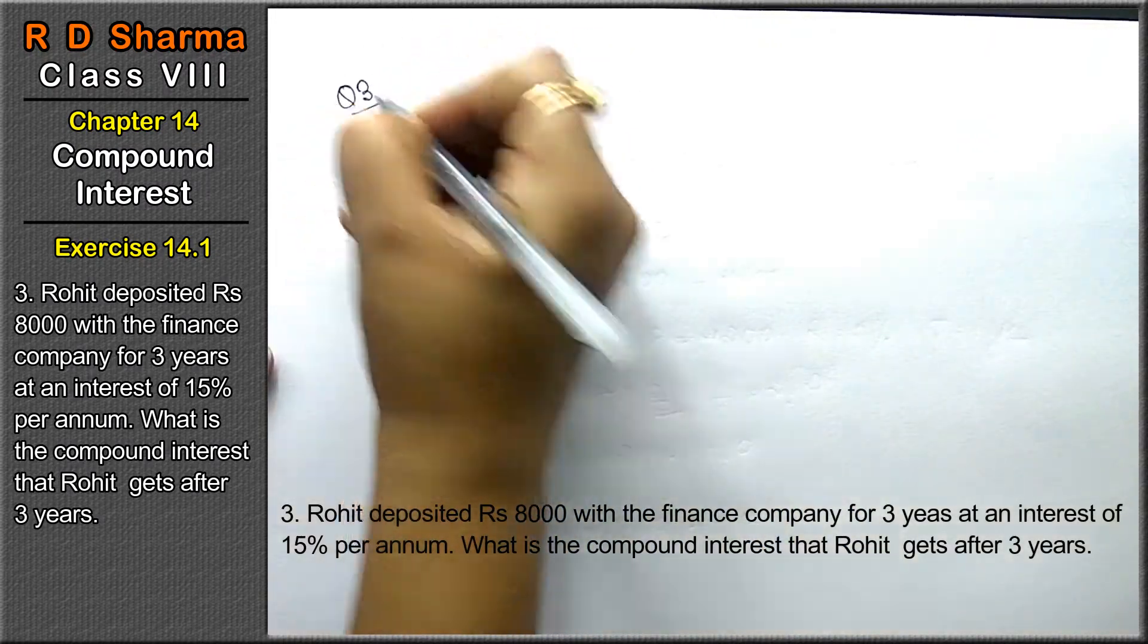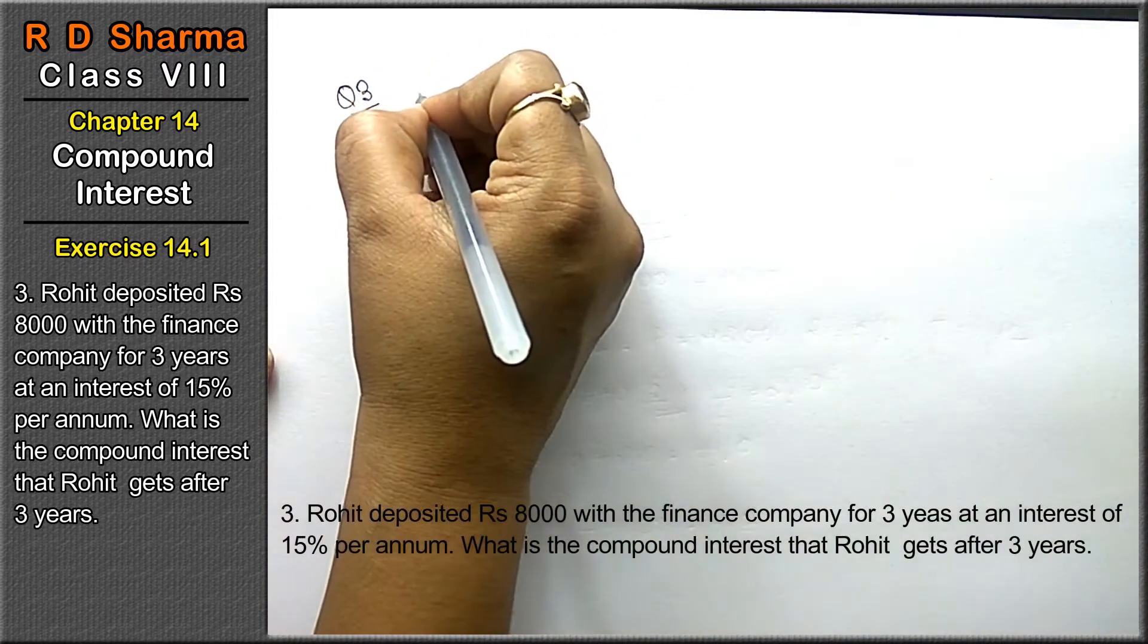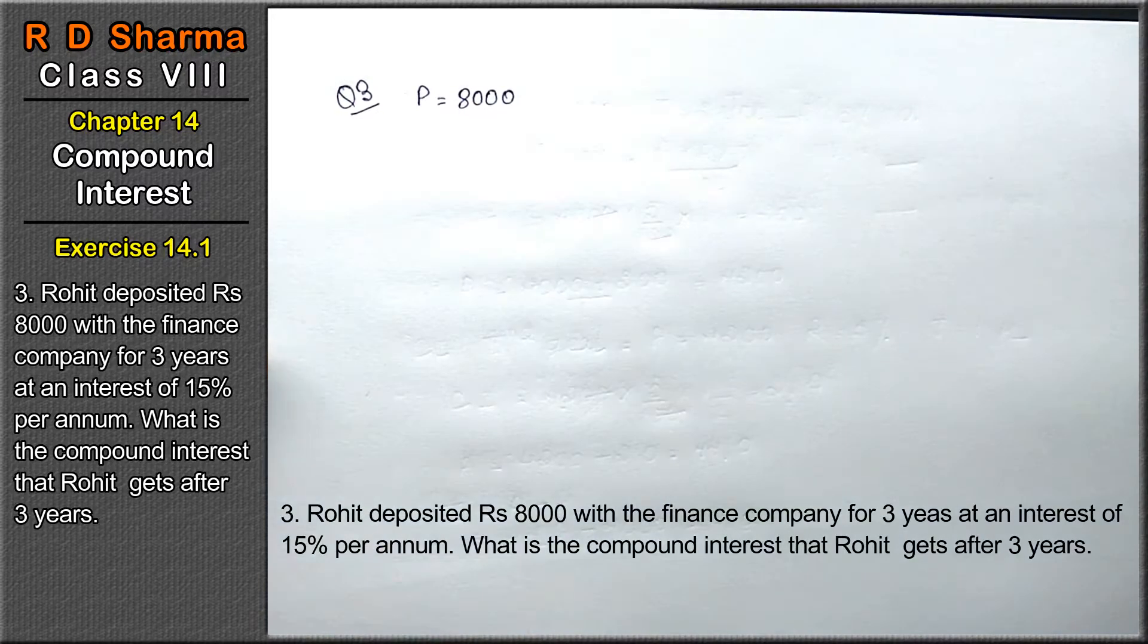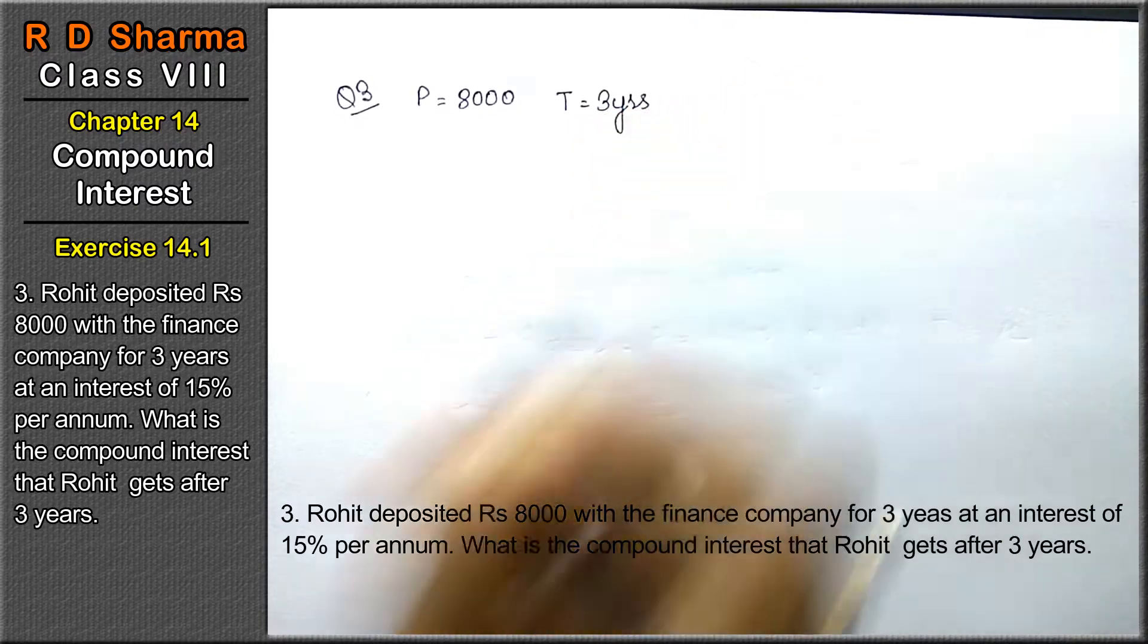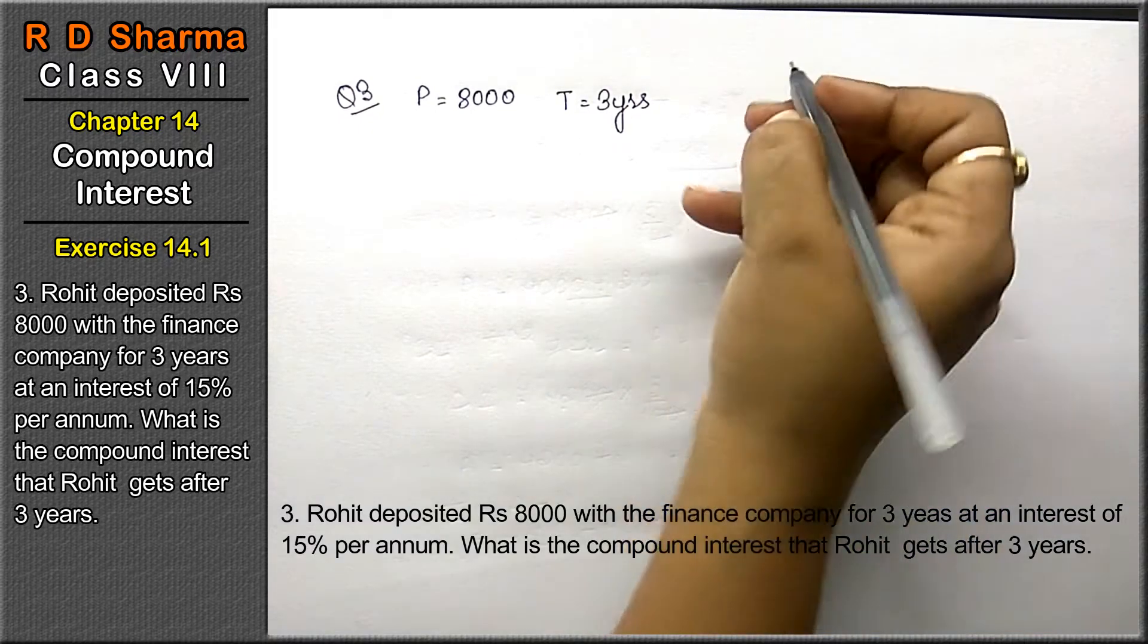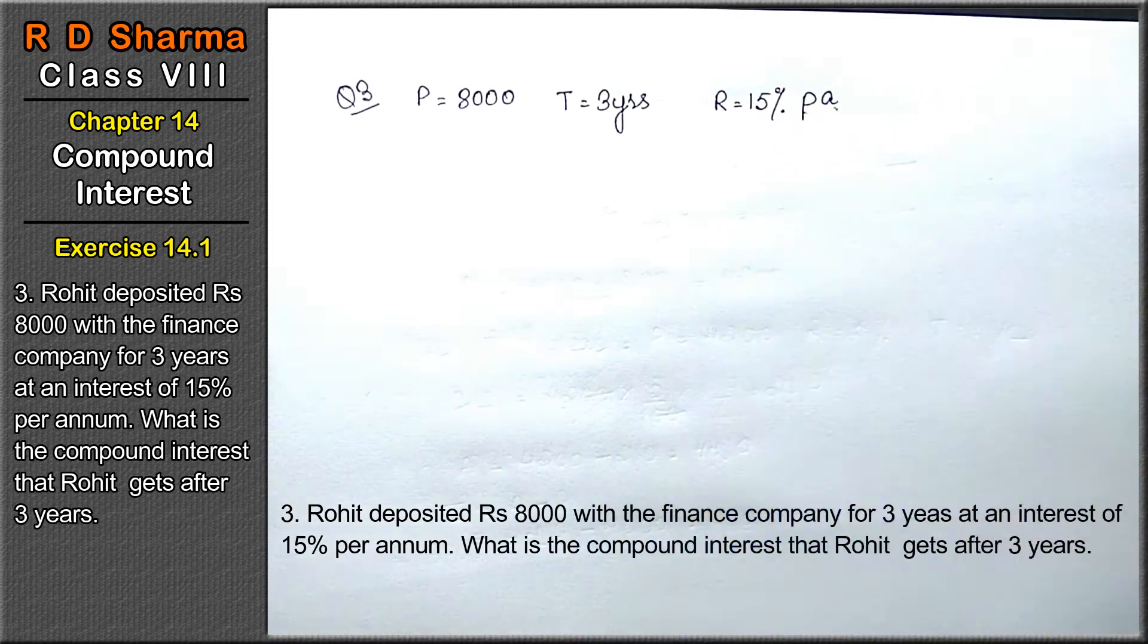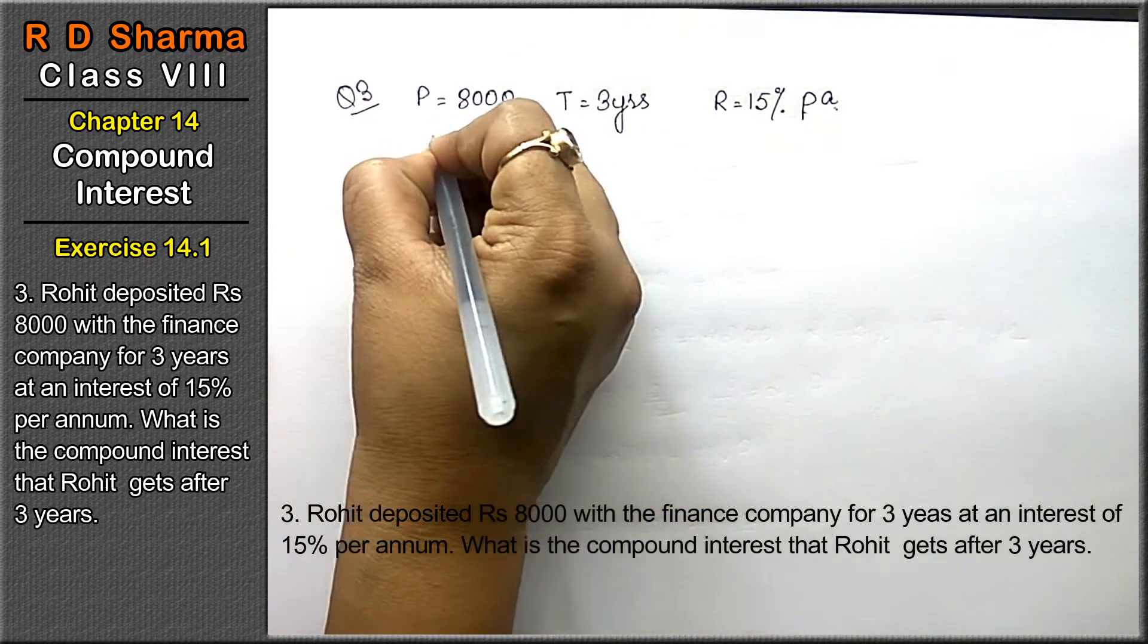Question number 3 is: Rohit deposited Rs. 8000 with the finance company for 3 years at an interest of 15% per annum. What is the compound interest that Rohit gets after 3 years?